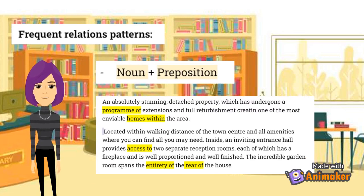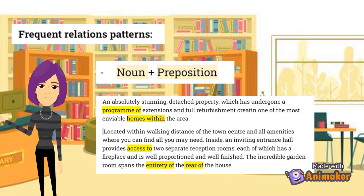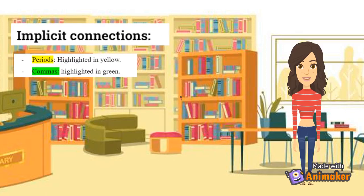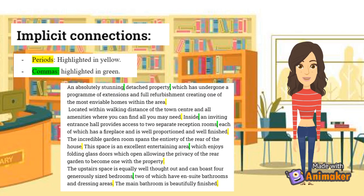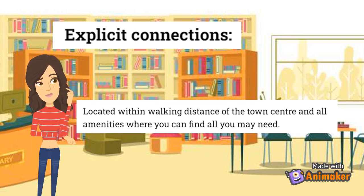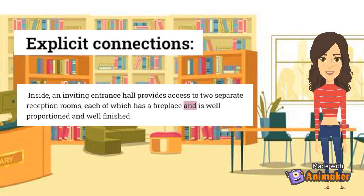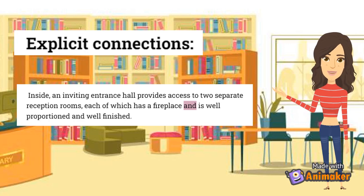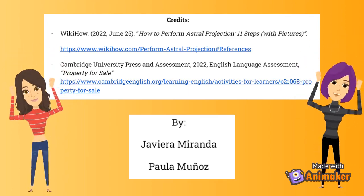The final relation pattern is noun plus preposition. Some examples of this pattern are "program of," "homes within," "access to," "entirety of," and "rear of." To conclude with the analysis of the second text, we can find implicit connections of ideas, such as periods highlighted in yellow and commas highlighted in green. Also, explicit connections can be found. For example: "Located within walking distance of the town center and all amenities where you can find all you may need" — here, the coordinating conjunction "and" is used for joining two independent clauses. Another example: "Inside, an inviting entrance hall provides access to two separate reception rooms, each of which has a fireplace, and is well proportioned and well finished." And that's the end of our video analysis of two different text types.